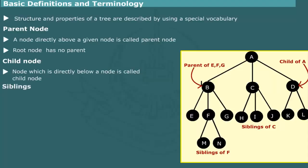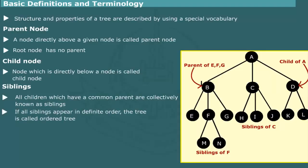Siblings. All children which have common parent are collectively known as siblings. Thus, H, I, J are siblings of C. Likewise, B, C and D are siblings of root. If all siblings appear in definite order, say in alphabetical order, the tree is called ordered tree. The tree shown in this figure is, in fact, an ordered tree.